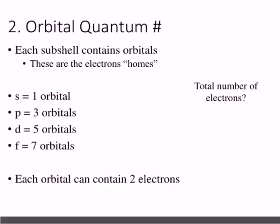Our second quantum number is called the orbital quantum number. Its symbol is a lowercase cursive l. Each subshell contains orbitals. So what we call the orbital quantum number is located within that principal energy level — there are sub-levels.